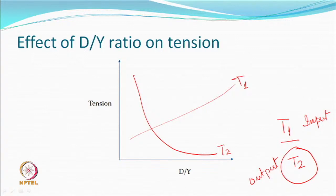T2 actually follows a curve where, when the disc is not rotating, T2 is high due to friction alone. As you keep increasing the D by Y ratio, the untwisting level also increases, and the tension in the output zone keeps decreasing. If twisting means an increase in tension, untwisting means the opposite. This behavior is surprising but consistent.